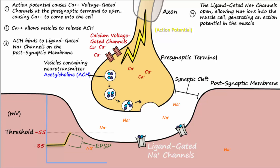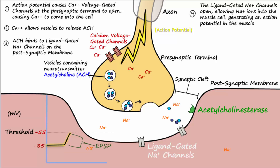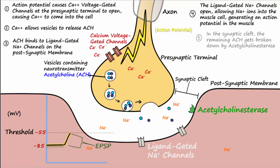The acetylcholine in the synaptic cleft is broken down by an enzyme known as acetylcholinesterase. Breakdown of acetylcholine is important in order to prevent it from continually causing sodium channels in the postsynaptic membrane to open.